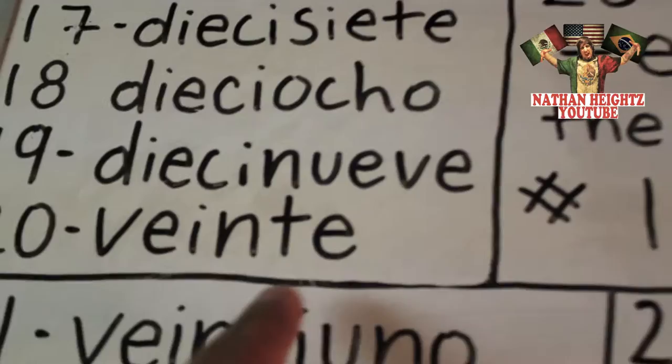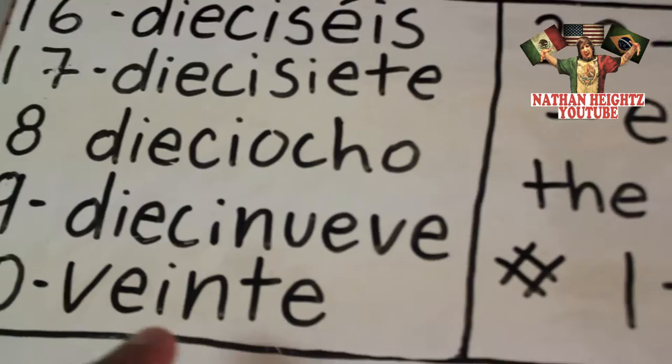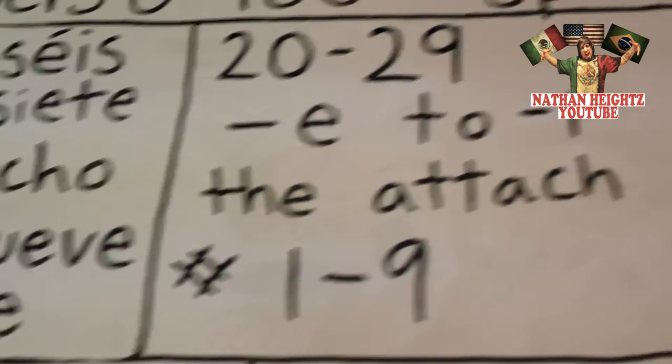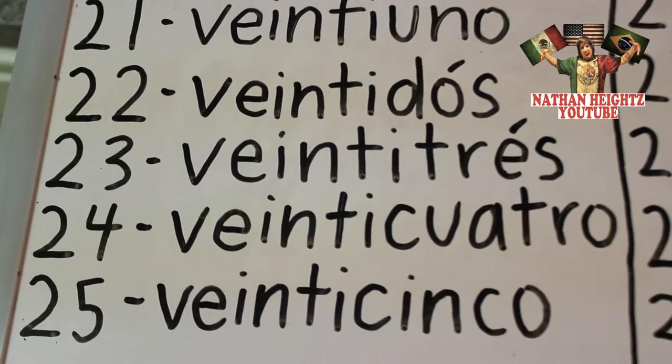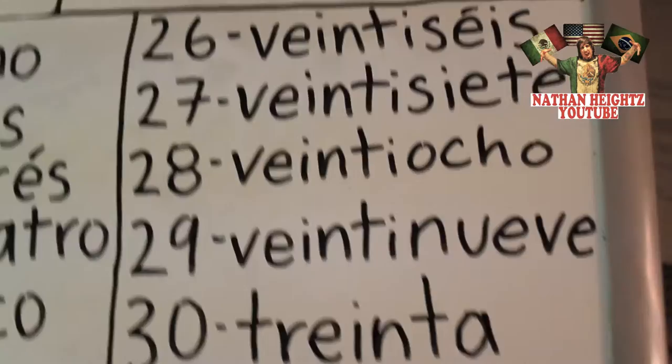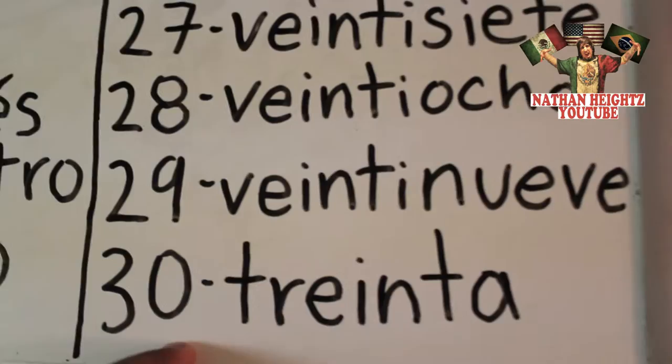For 20 through 29, we're going to take off the E ending of 20, change it to I, and attach numbers 1 through 9. It becomes a little pattern: 21, 22, 23, 24, 25, 26, 27, 28, 29, and 30.